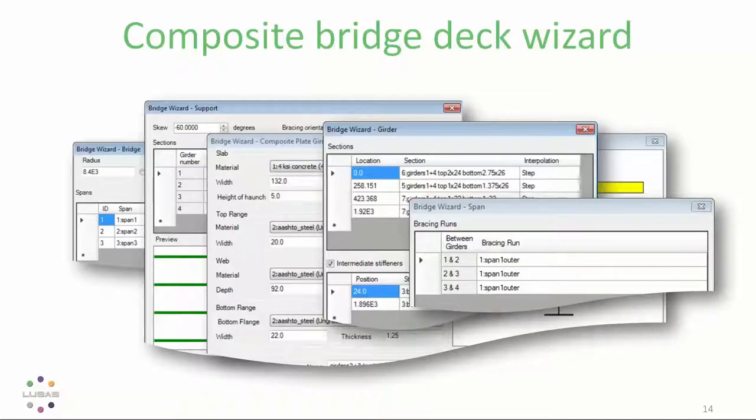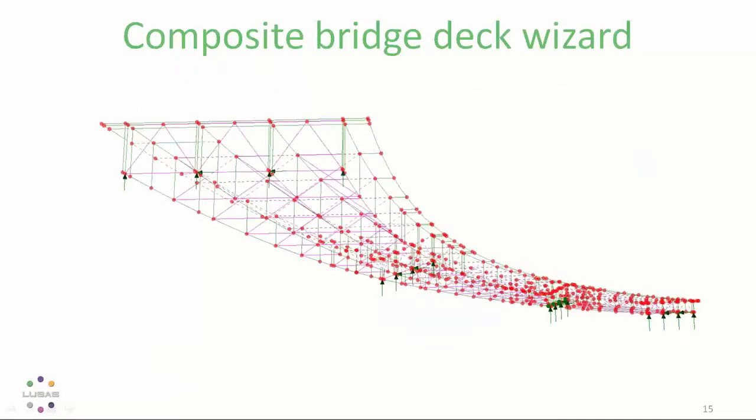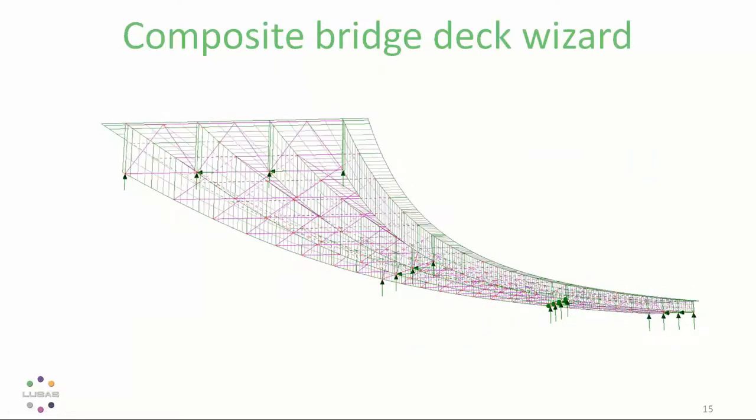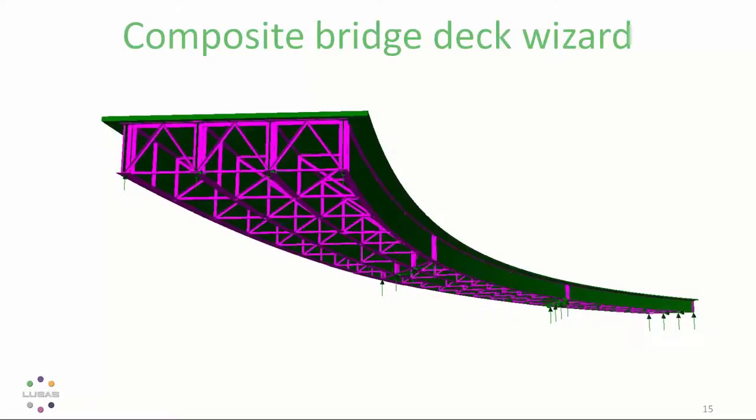And then essentially you click create model and you get all the points and lines and surfaces, the mesh attributes, thicknesses, cross sections, materials, supports, all that is done for you. And more importantly the model can be changed and edited as well either within the wizard or even at a later stage.